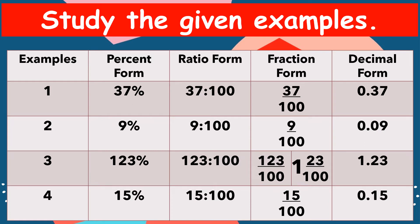For example number two, we have 9%. For our ratio, we have 9 is to 100. For our fraction form, we have 9 hundredths. For example number three, we have 123%. For our ratio form, we have 123 is to 100. For our fraction form, we have 123 hundredths. And in decimal form, we have 1 and 23 hundredths.